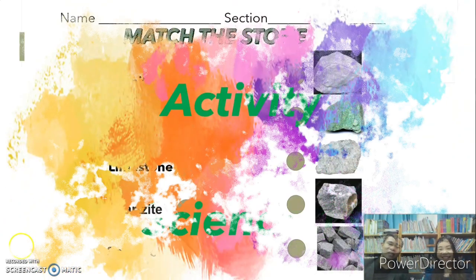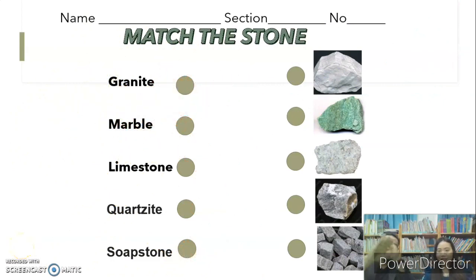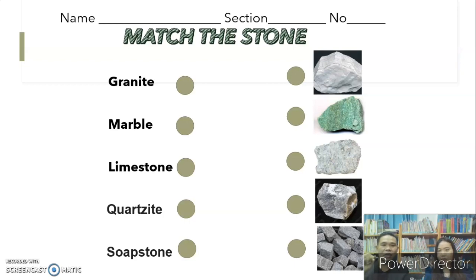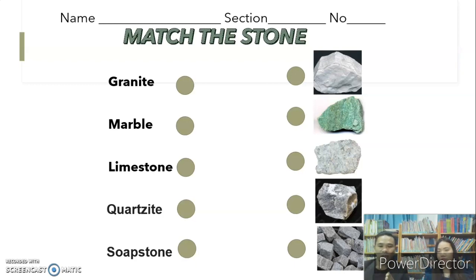Now for our activity, we have a worksheet. Write your name at the top of your paper or notebook, and put your name, section, and number. Number one is granite, number two is marble, number three is limestone, number four is quartzite, and number five is soapstone. On the left side of your paper you can draw the answers for number one, number two, and number three.